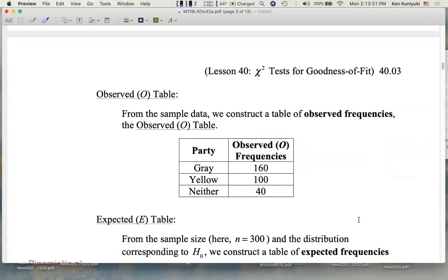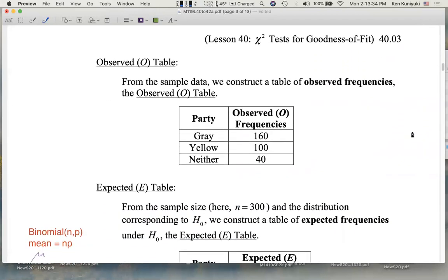Based on the statement of the sample data, we can quickly write out the O table, the table of observed values or frequencies. From the sample data, we construct a table of observed frequencies. We observed 160 Gray Party members, 100 Yellow Party members, 40 that were neither. That's the O table.